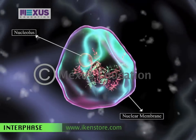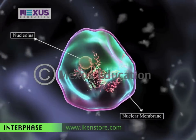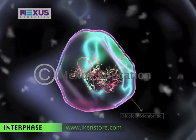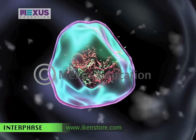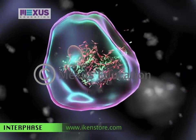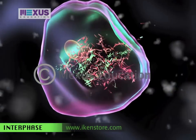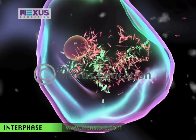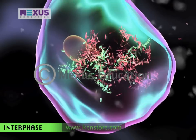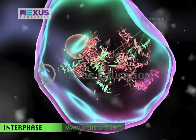the DNA in the nucleus has replicated but has not yet condensed to form chromosomes. They remain as loosely coiled chromatin.